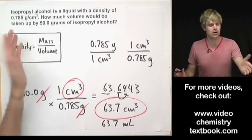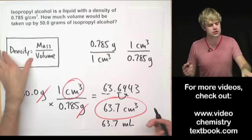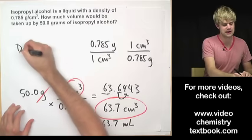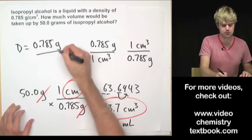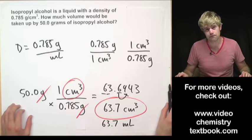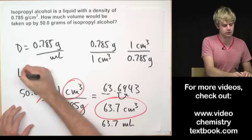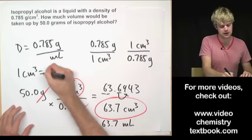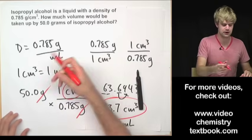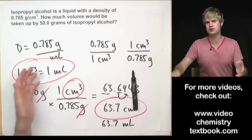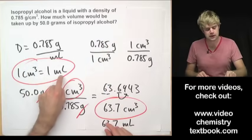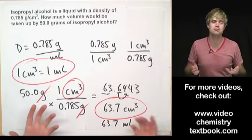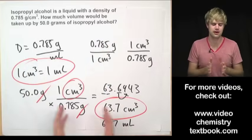And also because isopropyl alcohol is a liquid, if we wanted to be super, super picky, we could say that it had a density of 0.785 grams per milliliter, but it's the same thing. Remember that one cubic centimeter equals one milliliter, and if your teacher is really picky or something and you're talking about liquid, you might want to use milliliters instead of cubic centimeters, but it's the exact same thing. Anyway, that finishes our introduction to density.